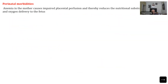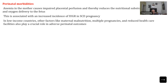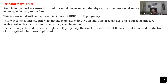What are all the perinatal morbidities? Anemia in the mother causes impaired placental perfusion, so the nutrition and oxygenation of the fetus suffers, resulting in IUGR, especially in patients who also have maternal nutrition problems like low-income groups or repeated pregnancies, which further reduce fetal growth and worsen perinatal outcomes.